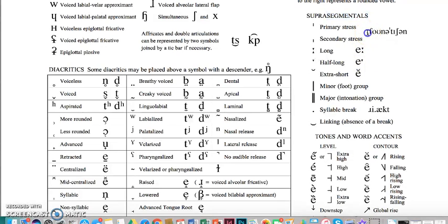For example, in this word, phonetician, we can mark stress. So the first syllable, phonetician, is stressed. So we use this primary stress bar, which is low and placed before the syllable.